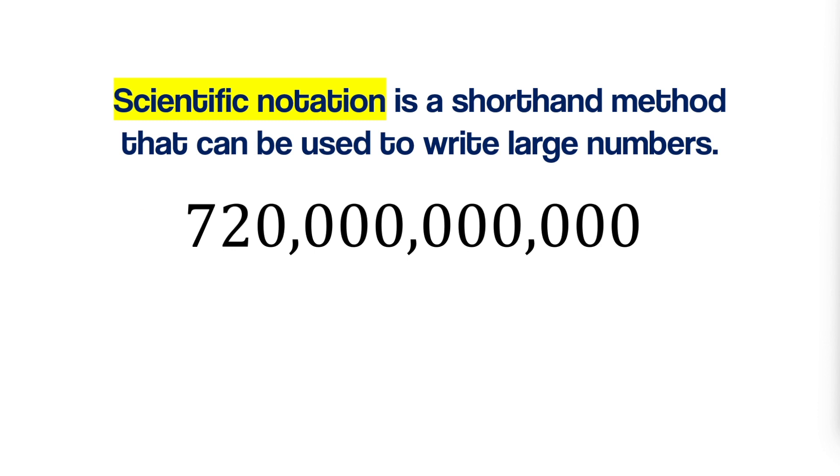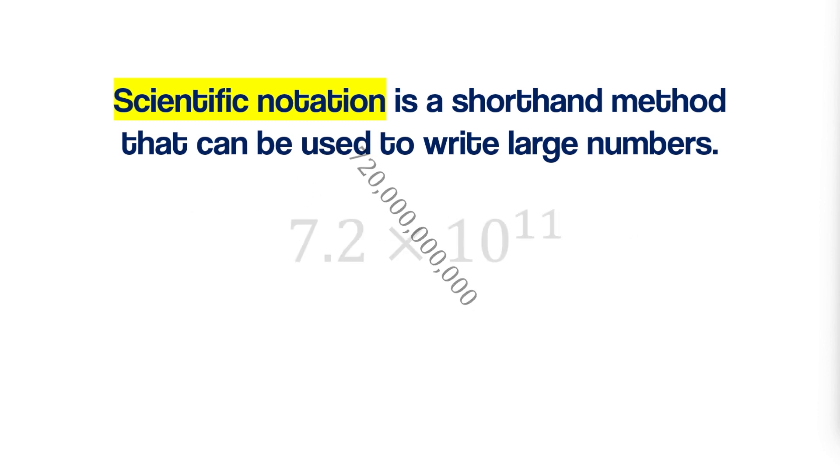Now, scientific notation is a shorthand method that can be used to write large numbers. It's called scientific notation because it's commonly used in science, like physics and astronomy, to represent very large numbers. This helps maintain precision in calculations and measurements.